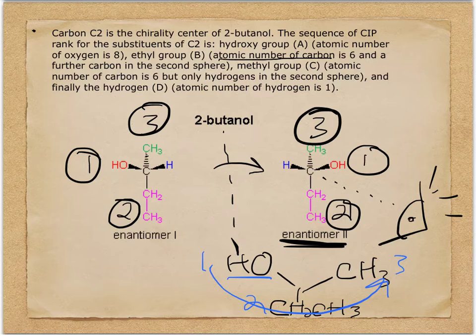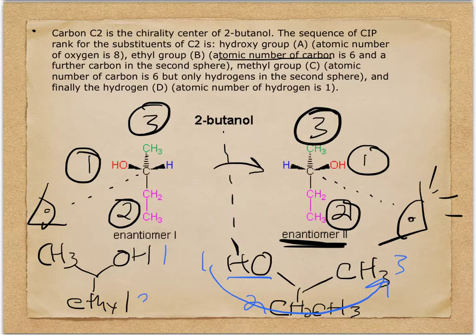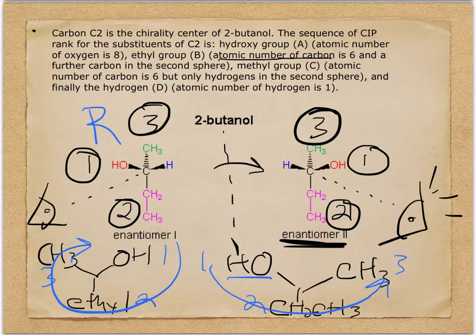For enantiomer one, spinning it so we're looking down the hydrogen bond — with the alcohol group, ethyl group, and methyl group arranged — following one, two, three, the rotation is clockwise. Clockwise direction is going to be our R, and counterclockwise is going to be our S. R comes from the Latin 'rectus' meaning right, and S from 'sinister' meaning left.